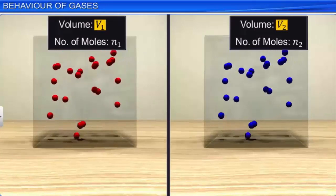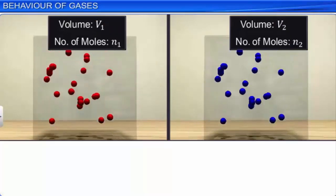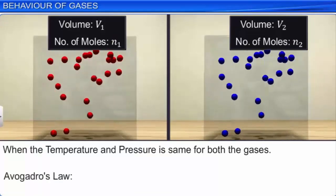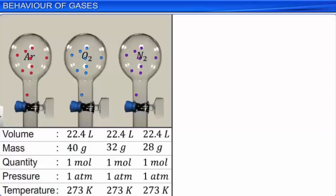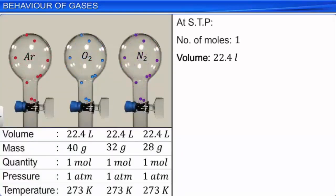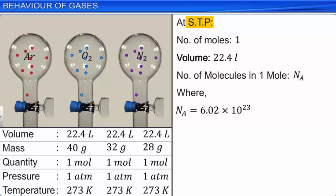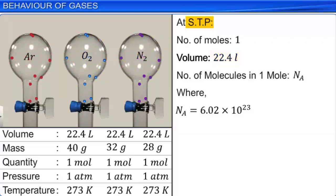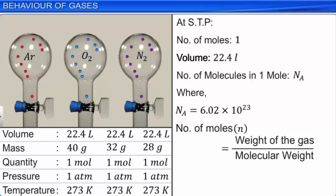Let V1 and V2 be the volumes of a gas, and N1 and N2 be the number of moles of the gas. If they are at the same pressure and temperature, according to Avogadro's law, V1/N1 = V2/N2. One mole of any gas can occupy a volume of 22.4 liters at STP, and it contains Avogadro's number of molecules — that is, 6.02 × 10²³ molecules. The mass of 22.4 liters of any gas at STP is equal to its molecular weight. Thus, the number of moles N = weight of gas in grams divided by its molecular weight in grams.